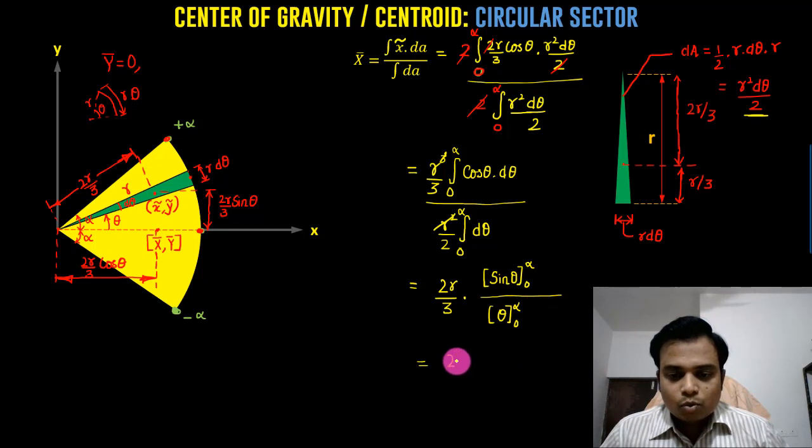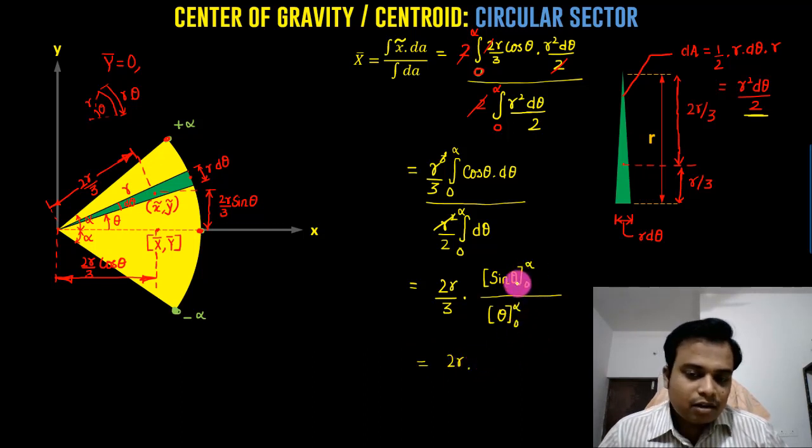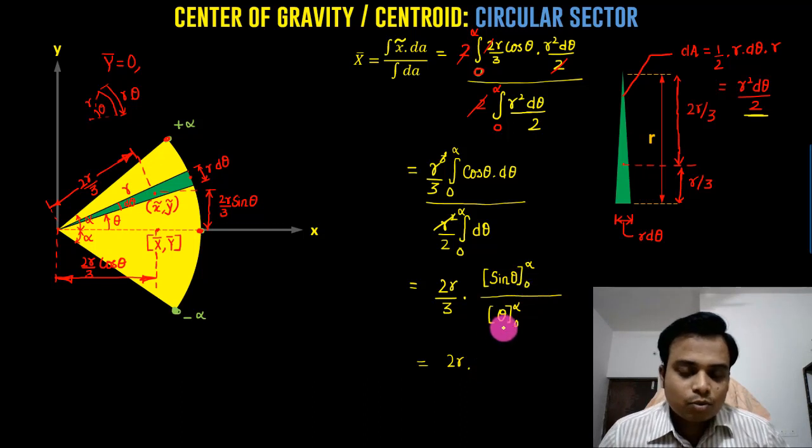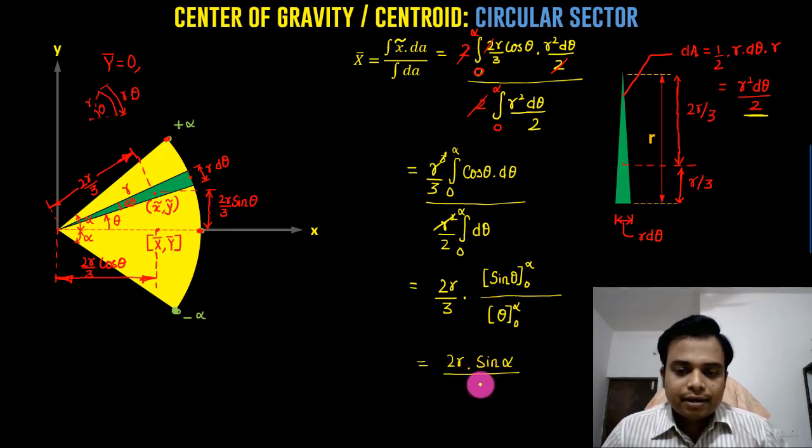This is going to be 2r multiplied by sine alpha minus sine 0, which is 0. This is going to be 2r sine alpha divided by 3 times alpha. So this precisely is the x coordinate of the centroid of the circular sector.